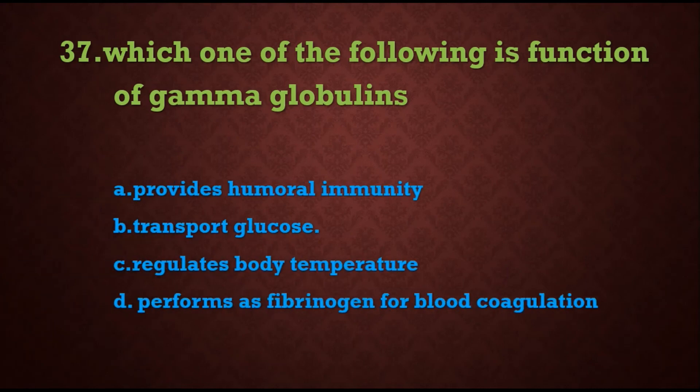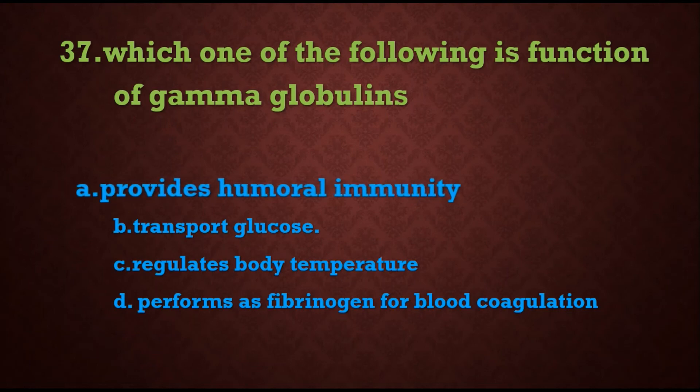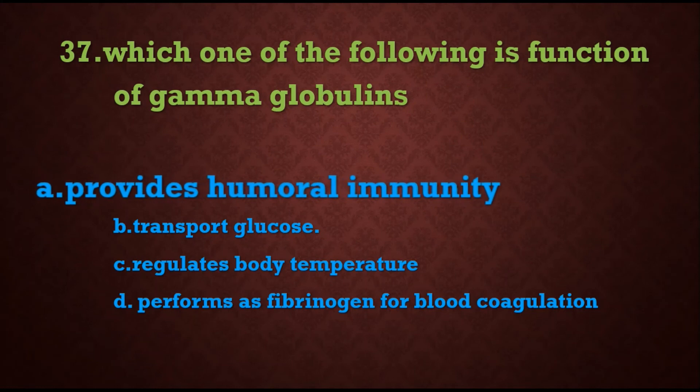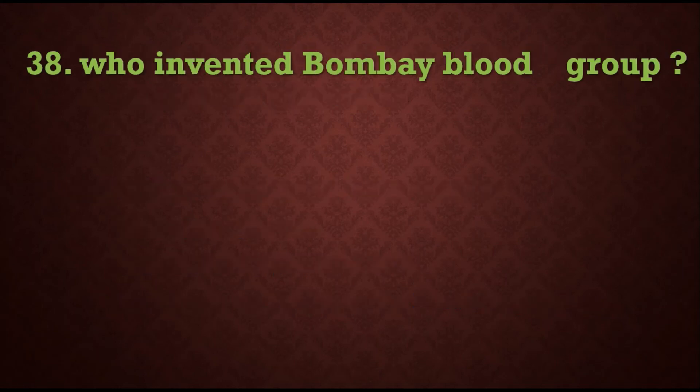Question 37: Which one of the following is a function of gamma globulin? Options are: A) provides humoral immunity, B) transport glucose, C) regulates body temperature, D) performs as fibrin for blood coagulation. Gamma globulins are involved in providing humoral immunity, that is antibody-mediated immunity, so the answer is A.